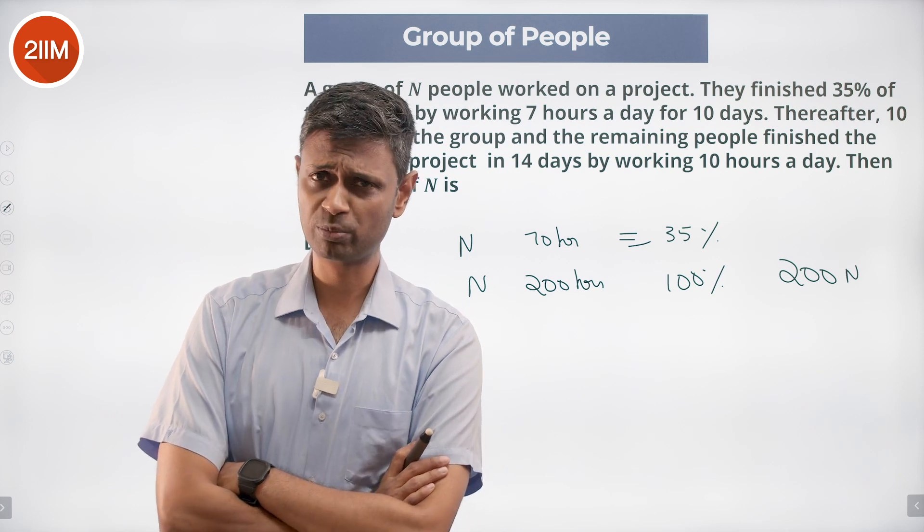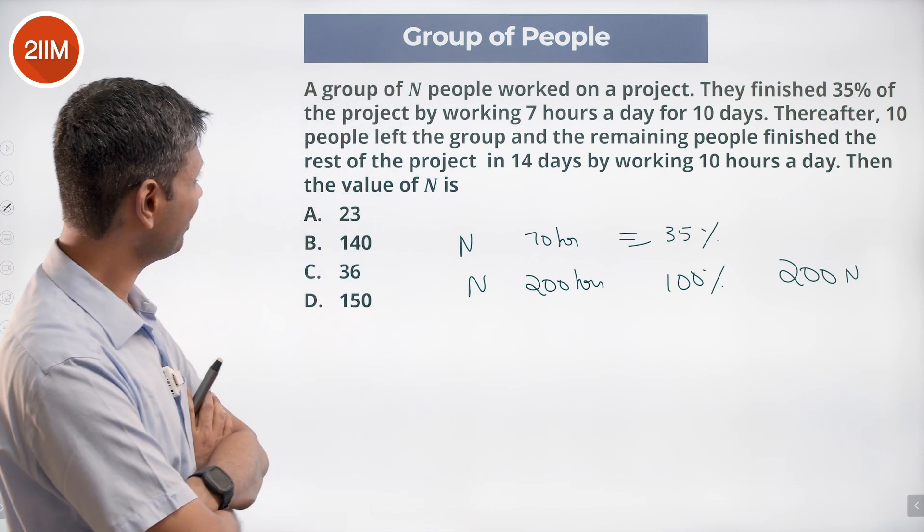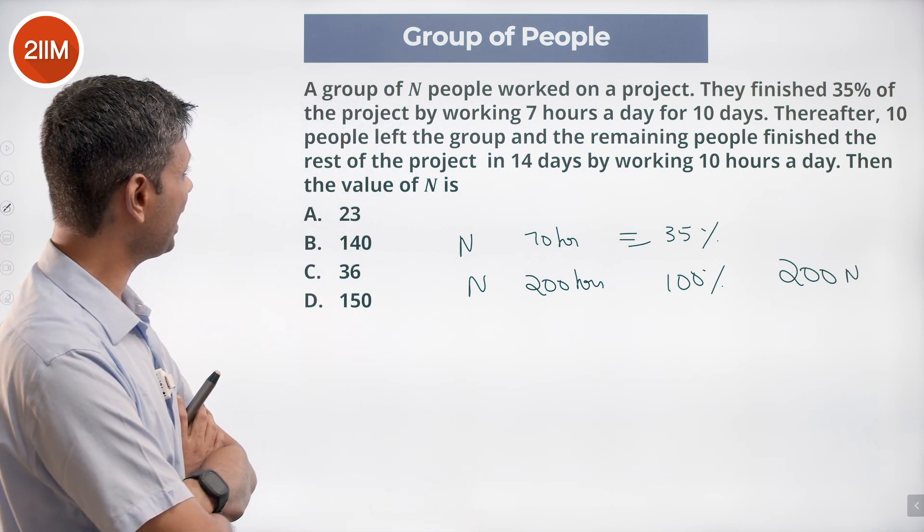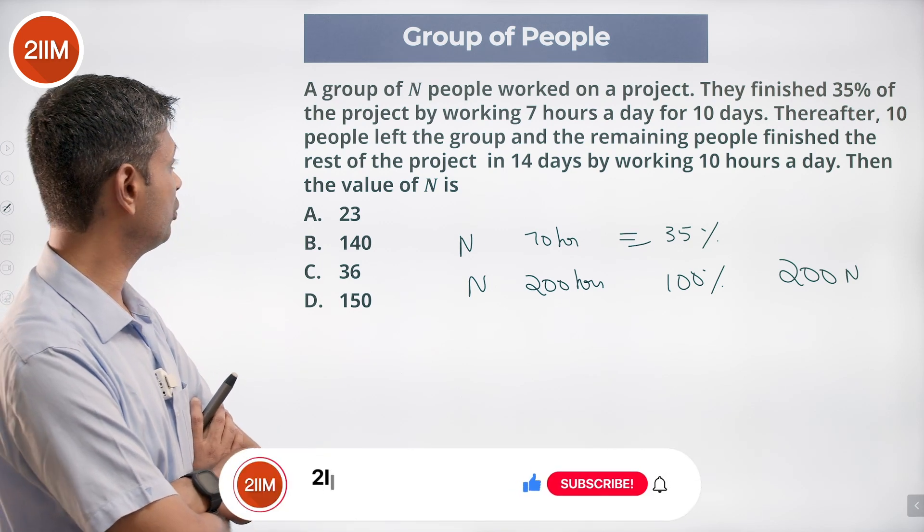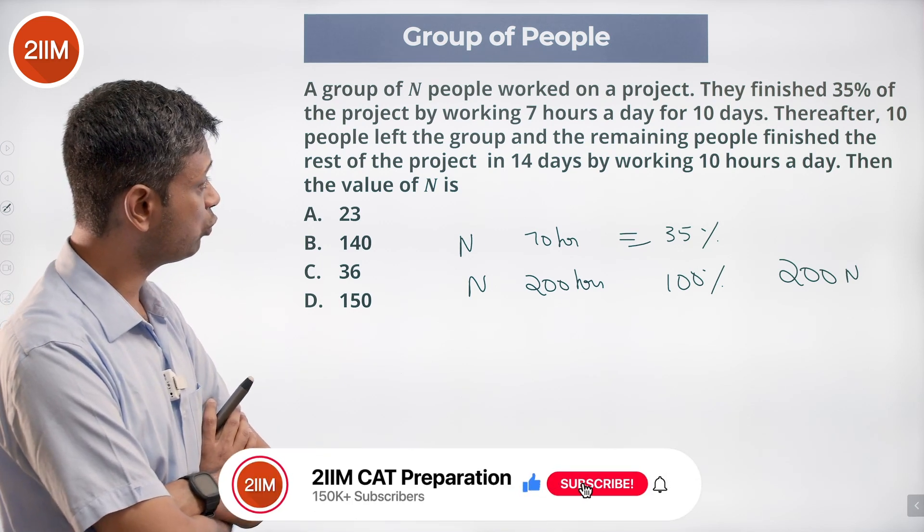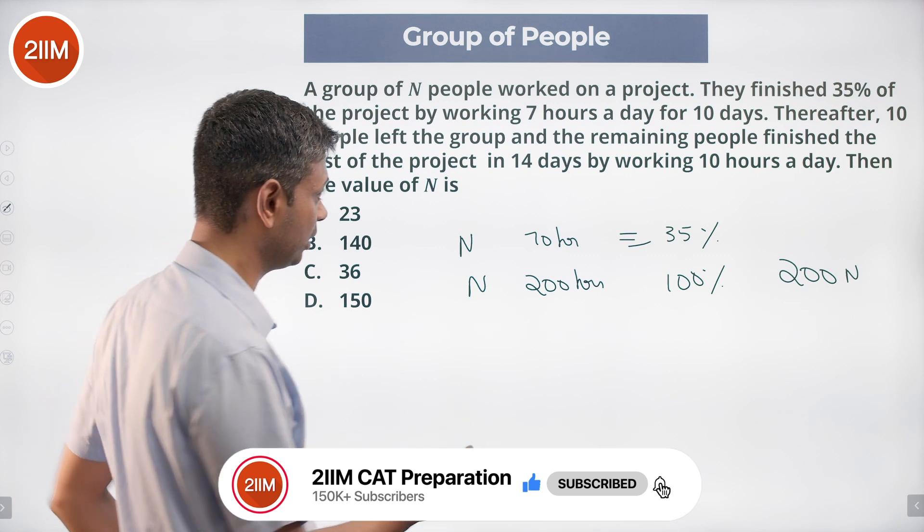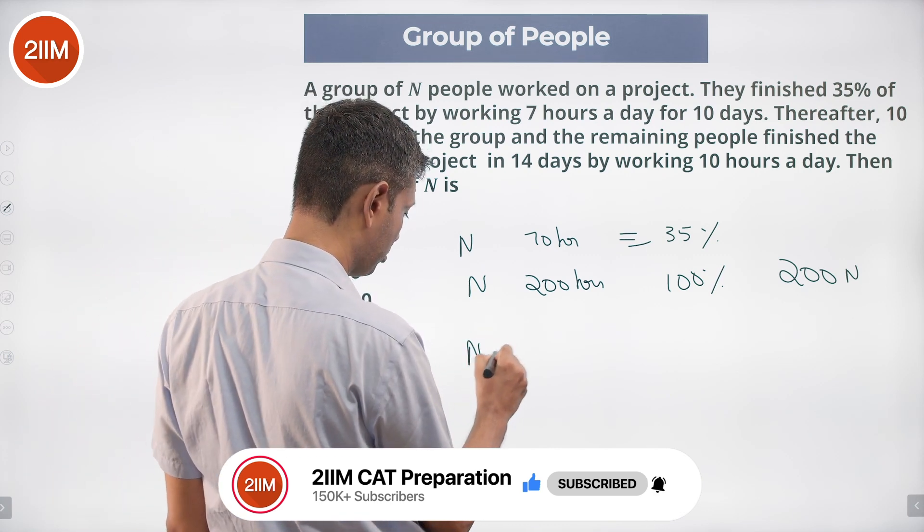Thereafter, 10 people left the group and the remaining people finished the rest of the project in 14 days working 10 hours a day. So the remaining N minus 10 people work 140 hours to finish the remaining task.